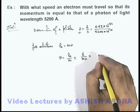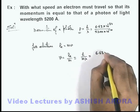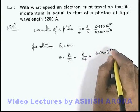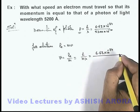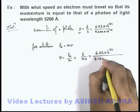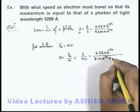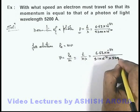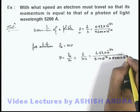On substituting the values we are getting 6.63 into 10 to power minus 34 divided by mass of electron we know it is 9.1 into 10 to power minus 31, multiplied by the wavelength is 5200 into 10 to power minus 10.